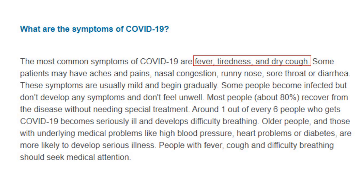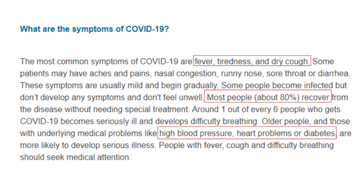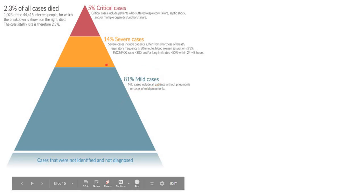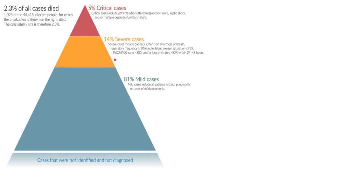The symptoms of COVID-19 are fever, tiredness, and dry cough. About 80% will have only mild illness or recover from the disease. However, 20% — especially the aged population and those with high blood pressure, heart problems, diabetes, cancer, or immunosuppression therapy — are more likely to develop serious illness. In this pyramid, about 80% of cases are mild, presenting with or without pneumonia, and do not need oxygen therapy. The 14% severe cases have shortness of breath, oxygen saturation below 93%, and a respiratory rate above 30 per minute — they need oxygen.